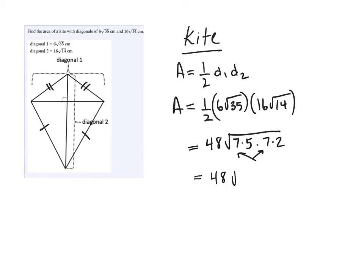This is 48 root 49 times 5 times 2. The square root of 49 will go out as a 7, and I'll take 7 times 48, which is 336.